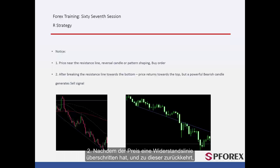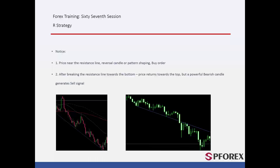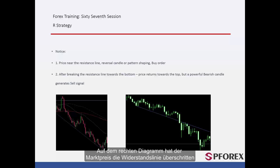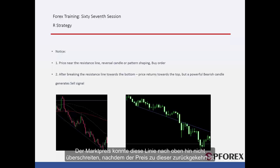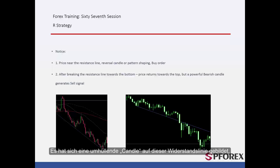Notification 2: After price passes a resistance line and returns towards it, if a powerful bearish candle forms on the resistance line, then a reliable sell signal will be generated. On the right graph, market price passed the resistance line but could not pass it towards the top after returning. An engulfing candle formed on this resistance line, so a trader could place a sell order.